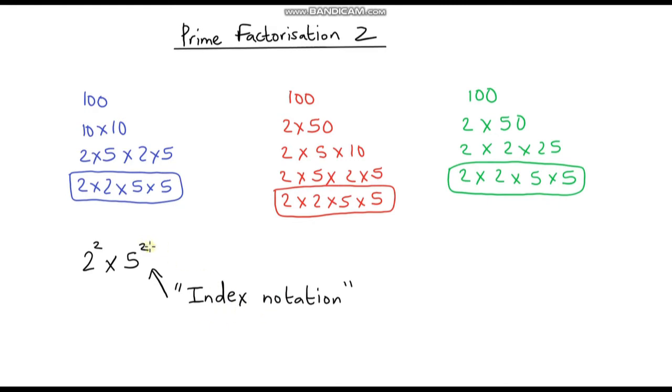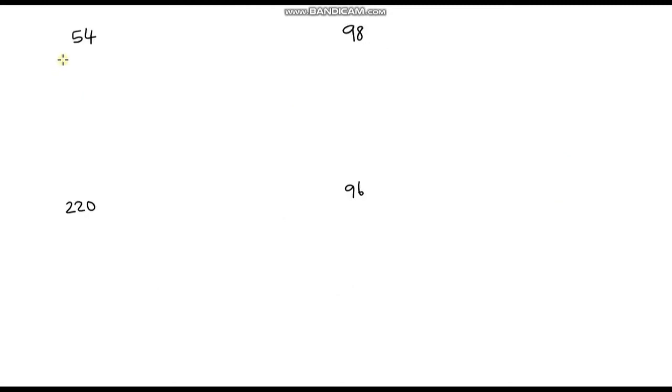So I'm going to give you some numbers to break down into the products of prime factors, and I'd like you to express your answers using index notation. Okay, so pause the video and have a go at doing these ones here. I'm assuming you've paused the video. The way I go through it might be using a slightly different method to how you've done it, but the final answer should be the same.